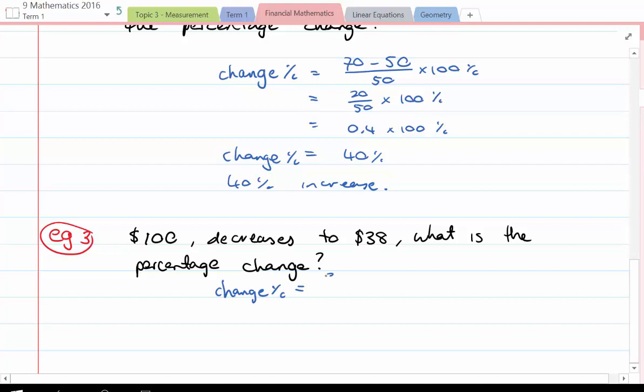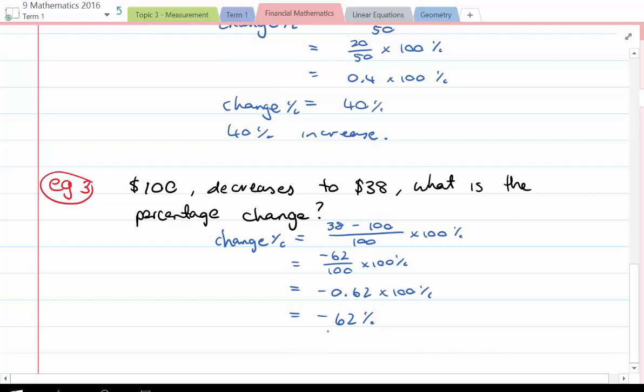It'll be the new value 38 subtract the original which is 100 over the original and then multiply by 100%. So 38 take away 100 is negative 62, so negative 0.62 times 100 and we're left with negative 62%. If it's a negative it means it's a decrease so we're looking at 62% decrease.